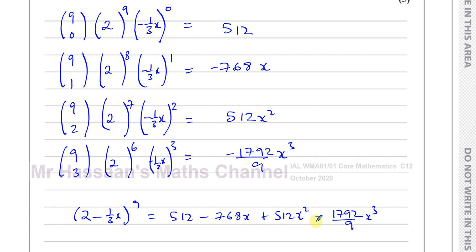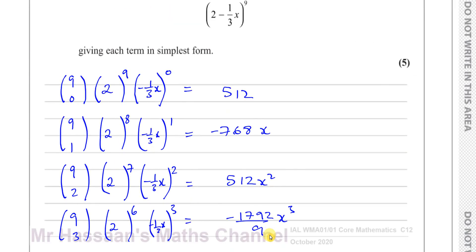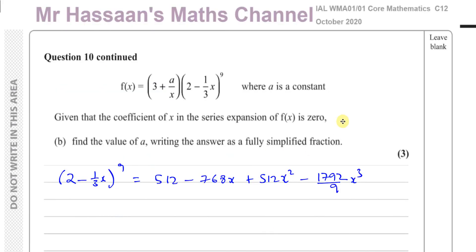So we can say that (2 minus one-third x) to the power of nine gives us, for the first four terms: 512 minus 768x plus 512x² minus 1792 over 9 x³. That's the answer to part A. Now we're going on to part B.